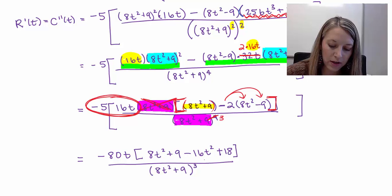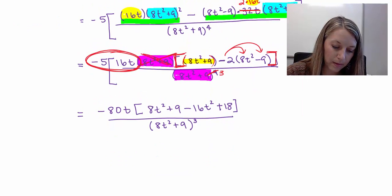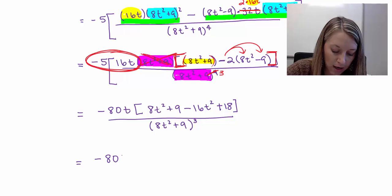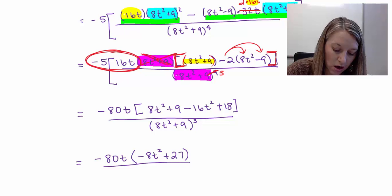So we're almost finished here. We have a little bit more work to do. What I need to do is I just need to combine my terms in my brackets, and I'm going to switch it to parentheses. So 8t² - 16t² gives me a negative 8t². And 9 plus 18 gives me 27. And so that is all over this (8t² + 9)³.